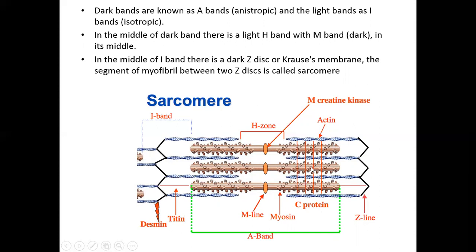The myofibril shows alternate dark and light bands. Dark bands are called anisotropic bands, or A bands, and light bands are called isotropic bands, or I bands. In the middle of the dark band there is an edge zone where only myosin is present, and at the center of that zone is a dark line called the M line. In the middle of the I band there is a disc-shaped line called the Z disc or Krause's membrane. The area of the myofibril between two Z discs is called the sarcomere, which is the structural unit of the muscle fiber.